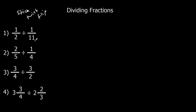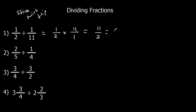OK, the first one — what we're going to do is change it to a times. So half times, and flip over the second one — 11 over 1. So 1 times 11 is 11, and 2 times 1 is 2. I could leave it as 11 over 2, or I could change it: 2 goes into 11 five times and I've got 1 half left over — so 5 and a half.